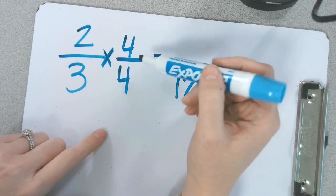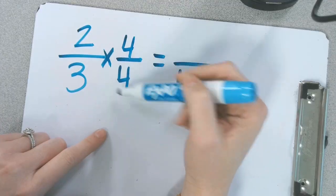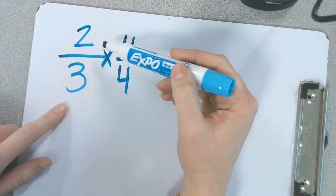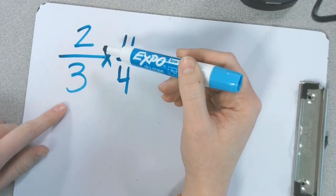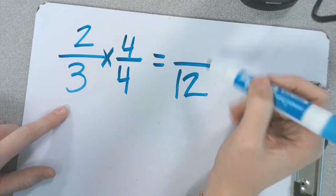The reason that we multiply by a fraction equivalent to 1 whole is I don't want to change the value of 2 thirds. I just want to change the size of the pieces.